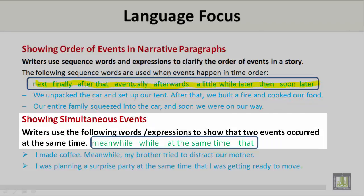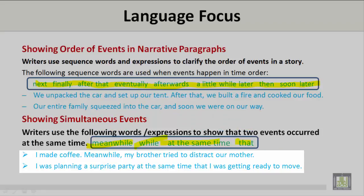Showing Simultaneous Events. Writers use the following words or expressions to show that two events occurred at the same time: meanwhile, while, at the same time, and as well as that. Examples: 'I made coffee. Meanwhile, my brother tried to distract our mother.' And: 'I was planning a surprise party at the same time that I was getting ready to move.'